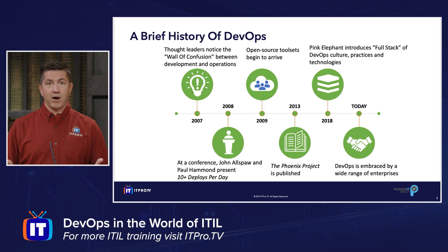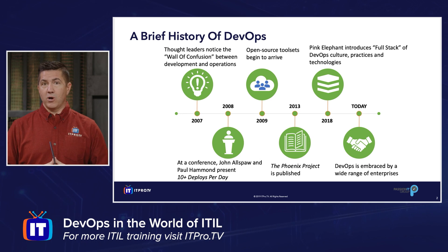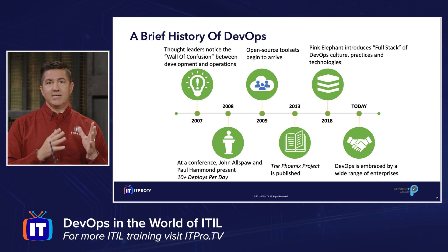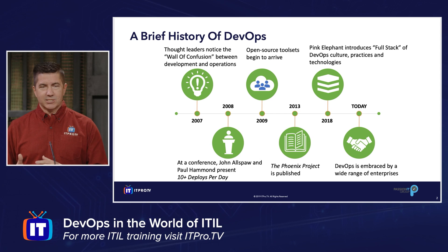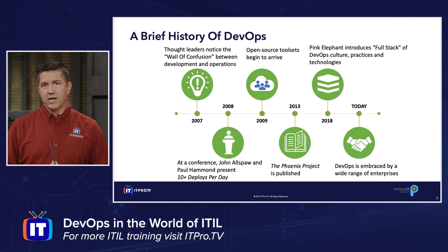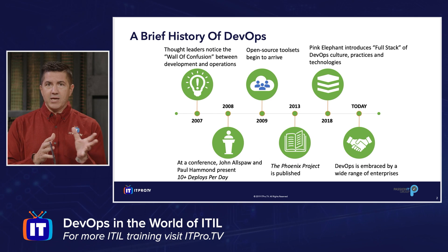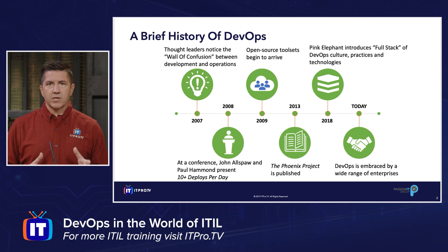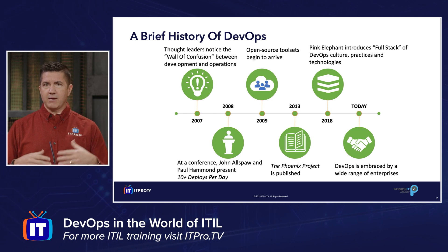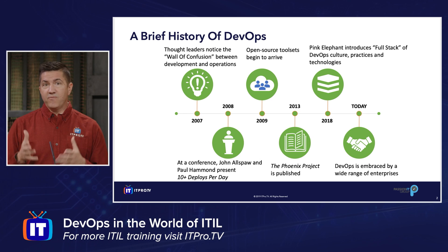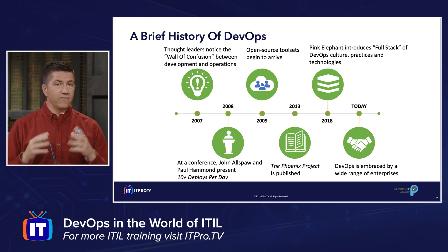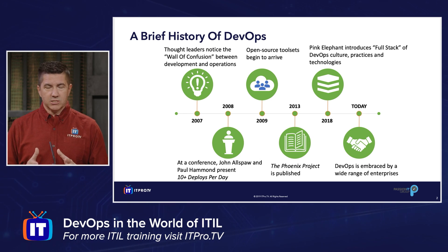This talk inspired Patrick to launch his own conference called DevOps Days. By 2009, open source tool sets were built for DevOps and began to emerge. And it was noticed that they could actually work with configuration management tools — things like Puppet — to further automate the aspects of relationships between development and operations.